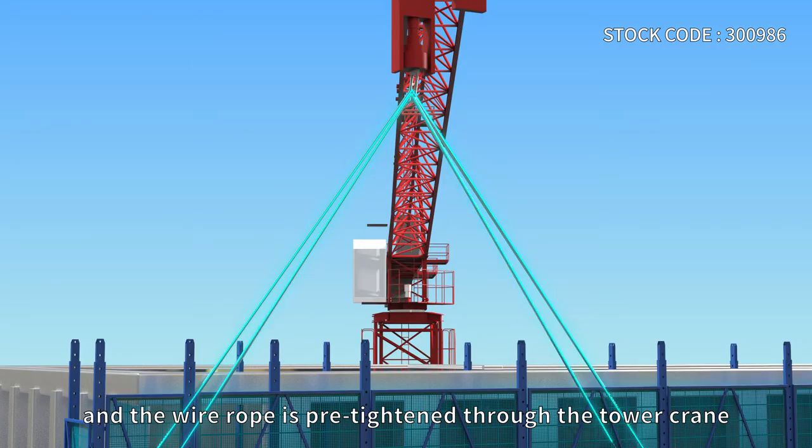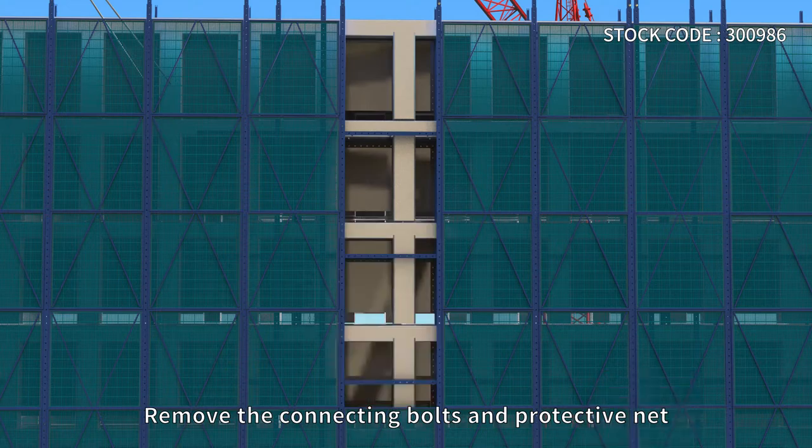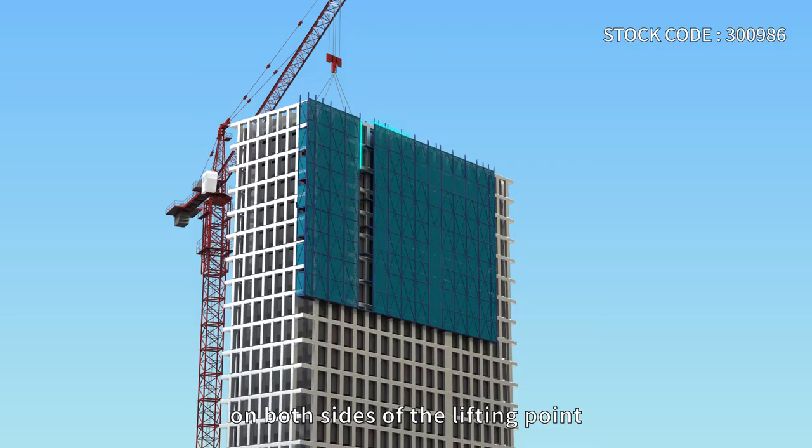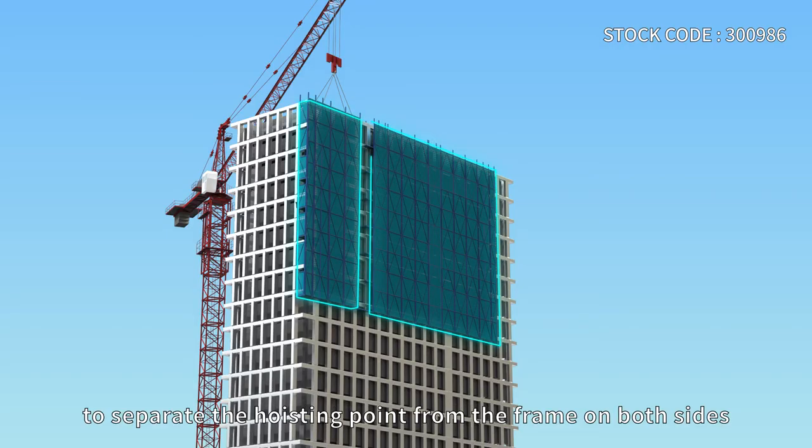Pre-tighten the wire rope through the tower crane. Remove the connecting bolts and protective net on both sides of the lifting point to separate the hoisting point from the frame on both sides.